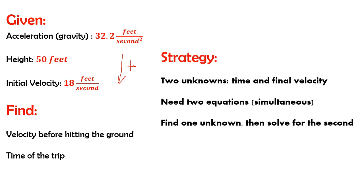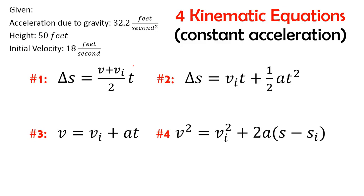We've got two unknowns — time and our final velocity — so we're going to need two equations to solve for them. We'll solve for one unknown first and then use that solution to solve for the second unknown. We have an initial velocity, we don't know our final velocity, we don't know how long this trip takes, but we do know the height and we know our acceleration is constant. That takes us to our four kinematic equations — we have our acceleration due to gravity, our height delta s, and our initial velocity.